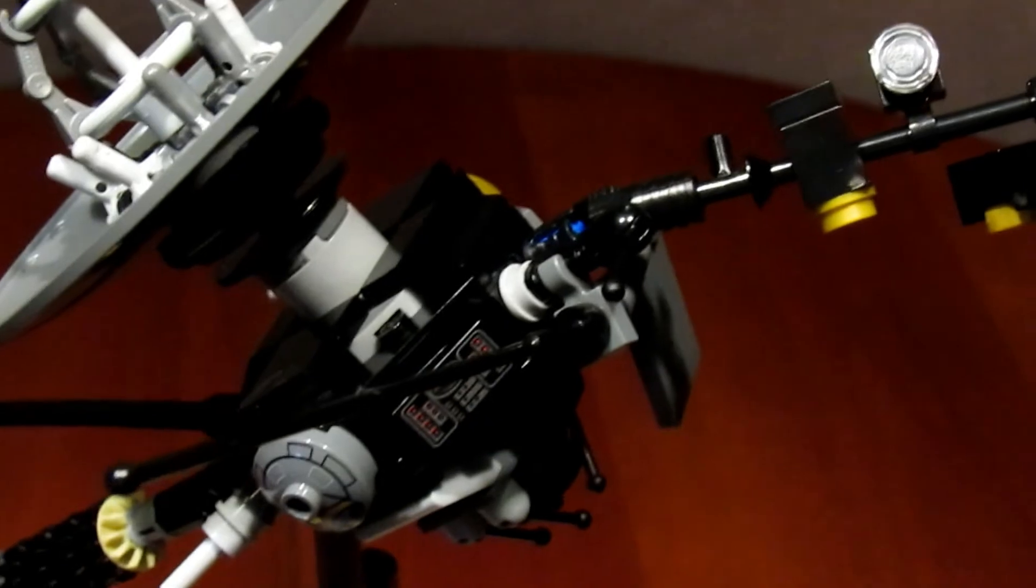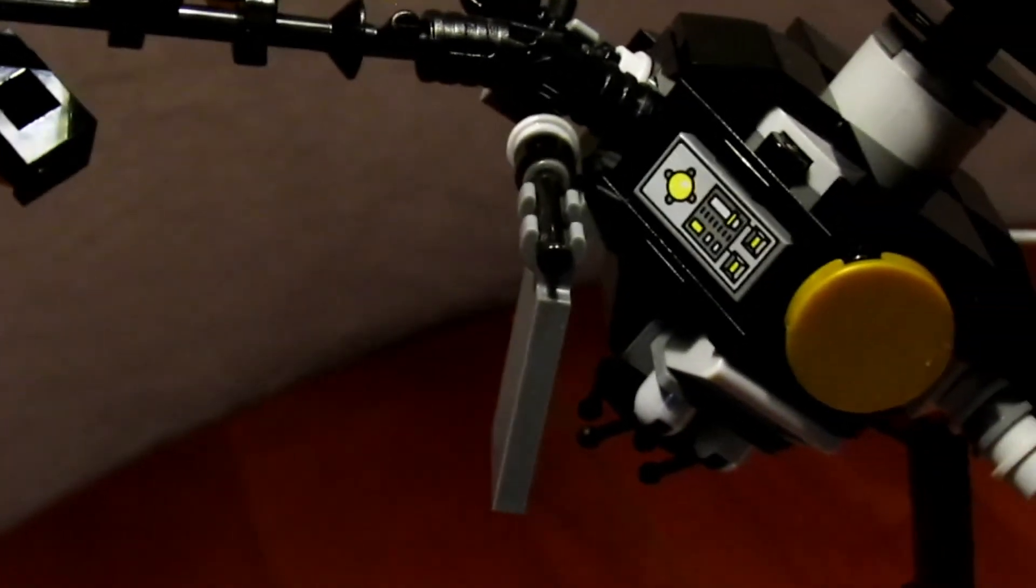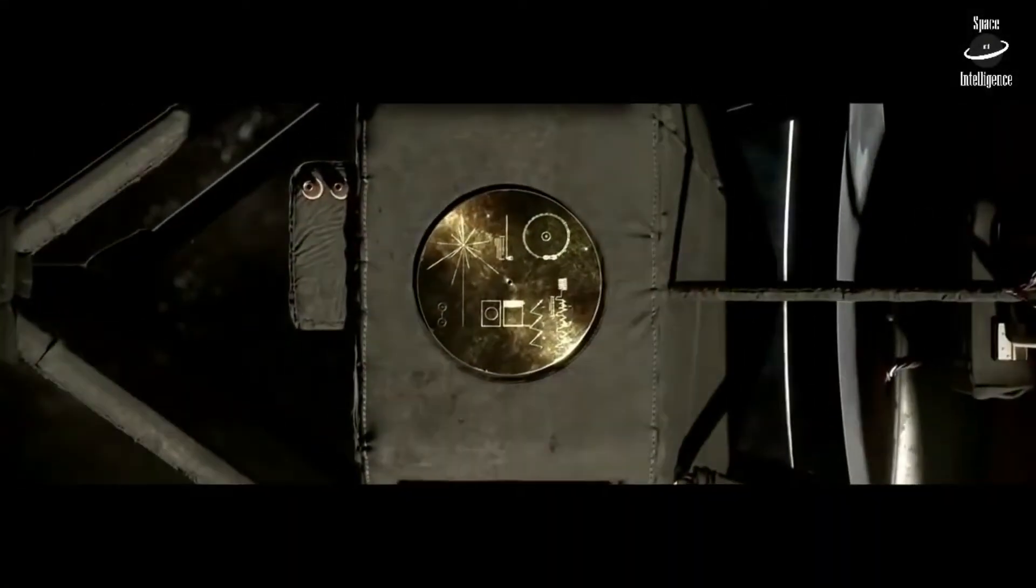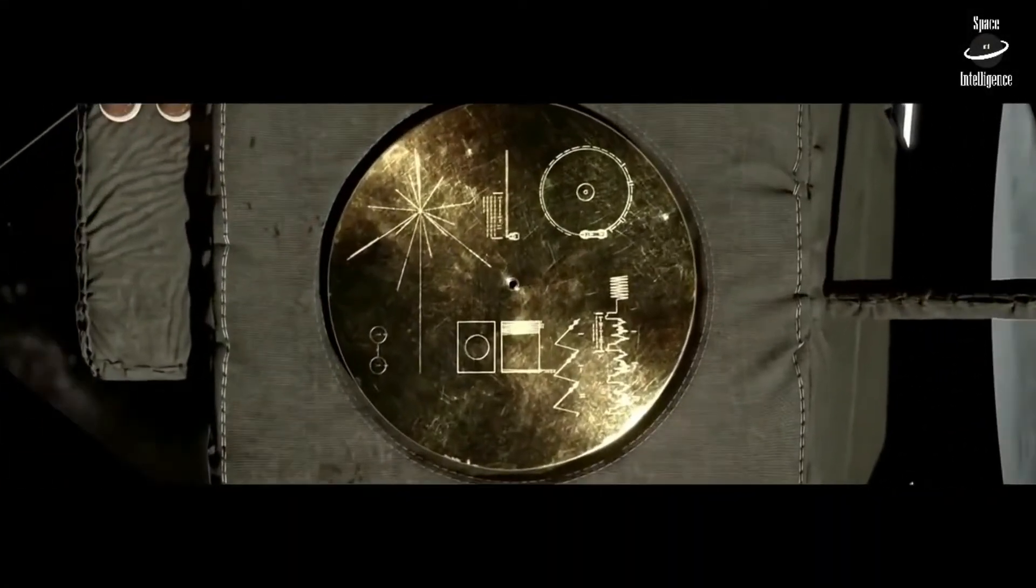Accordingly, as each Voyager left Earth for the planets and the stars, it carried with it a golden phonograph record encased in a golden mirrored jacket.